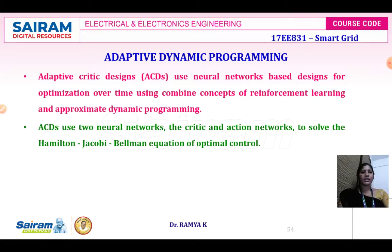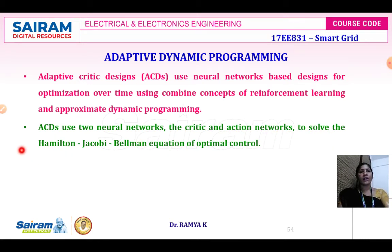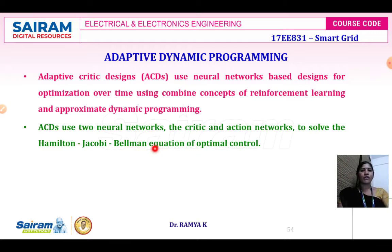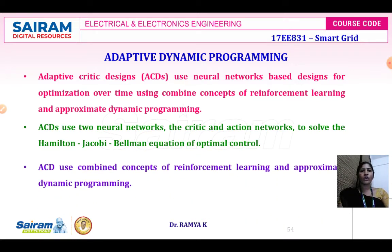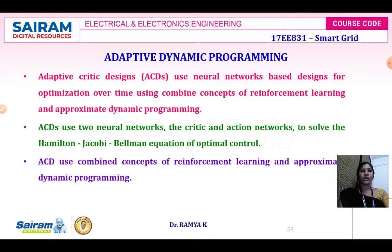The ACD uses two neural networks: one is the critic network and the other is the action network. These two networks solve optimization problems that involve the Jacobian matrix method, Hamilton method, and Bellman's principle of optimality. The critic network approximates the cost-to-go function.